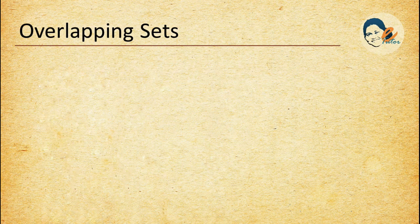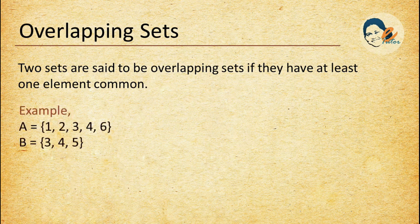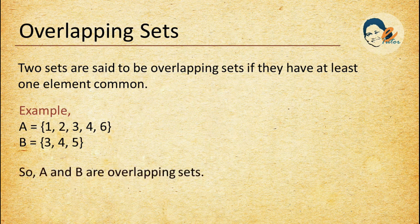Overlapping sets: two sets are said to be overlapping sets if they have at least one element in common. Example: if set A = {1, 2, 3, 4, 6} and set B = {3, 4, 5}, then 3 and 4 are common in both sets, so A and B are overlapping sets.